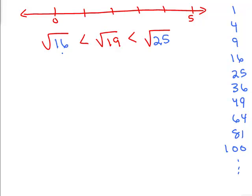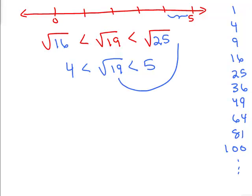The square root of 16 is 4, and the square root of 25 we can simplify to 5. Therefore, we know the square root of 19 is somewhere between the numbers 4 and 5. We know it's somewhere in this area on the number line. Square root of 19 has to be in there, and you could approximate it — it looks like it might be a little bit closer to 4, maybe around here.